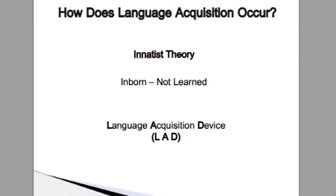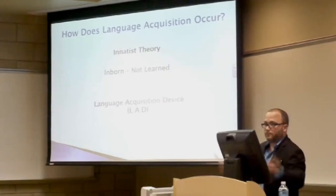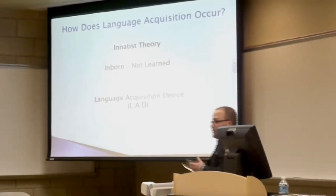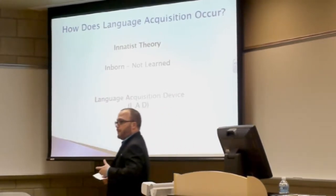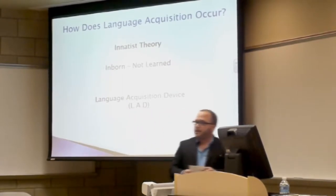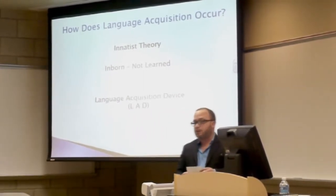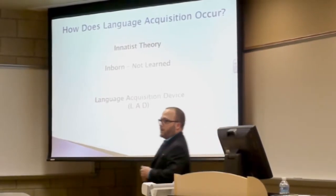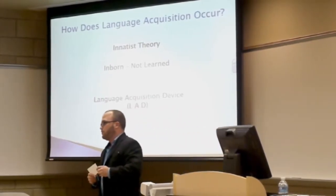In order to begin, we are going to talk about the innatist theory of language acquisition, which most of you are probably familiar with. The innatist theory states, or suggests rather, that language acquisition is inborn — it's something that is not learned. It's like walking; we are all born with two legs, and unless you have a physical impediment, once those muscles get enough strength to support your upper body, you can walk. And that's how they see the language acquisition process — it is innate.